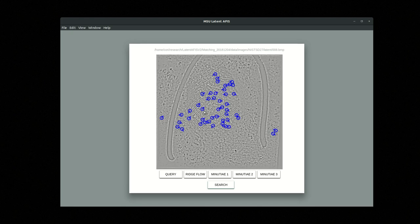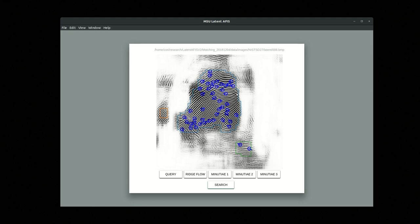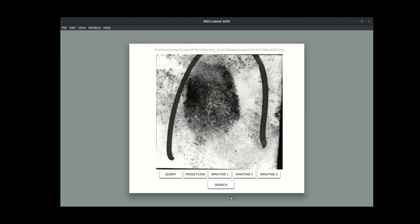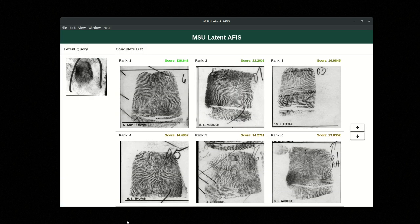We're also going to see the three different minutiae sets along with the background image, which is the result of the processing that led to this particular minutiae set. You can see that this has one type of background image, this one is different, and then the third one is going to look like the input latent query. When we're satisfied with that, we can go ahead and search.